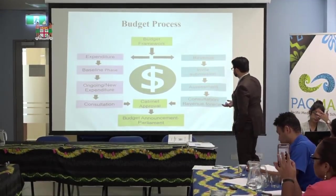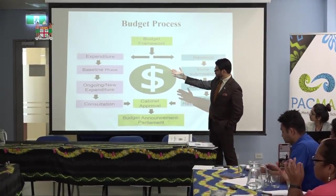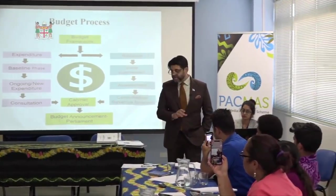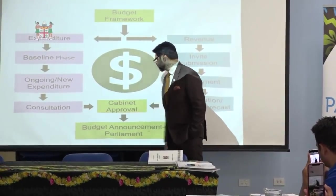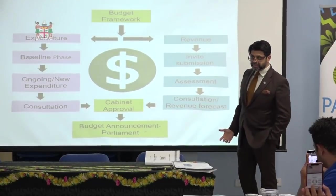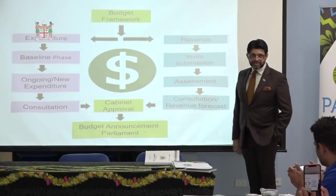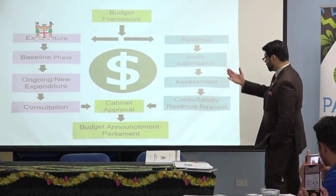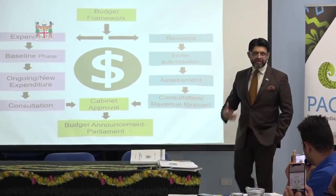The budget framework: on the expenditure side, we look at the baseline, they propose a figure, then you have ongoing and new expenditure with new programs. On the revenue side, we generate revenue and invite submissions from members of the public. For example, a company like Pinto Enterprises in Vanua Levu — they make brooms and now plastic bottles for cough mixture — came and said we need protection.